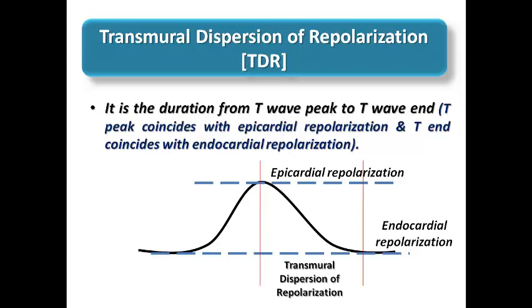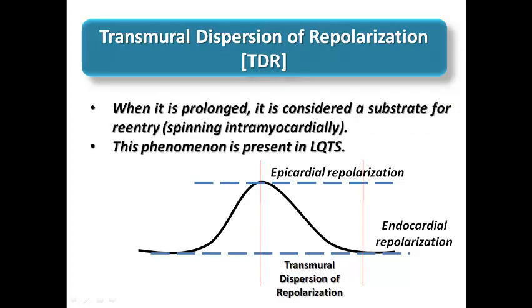This duration is called transmural dispersion of repolarization (TDR), because it represents the difference between repolarization in the epicardium and the endocardium. The longer this duration, the more it acts as a substrate for re-entrant circuits inside the myocardium due to voltage differences between epicardium and endocardium. In patients with long QT syndrome who have long TDR, this increases susceptibility to VT and torsades de pointes, which can cause sudden cardiac death. A wide-based T-wave may be considered a high-risk sign.